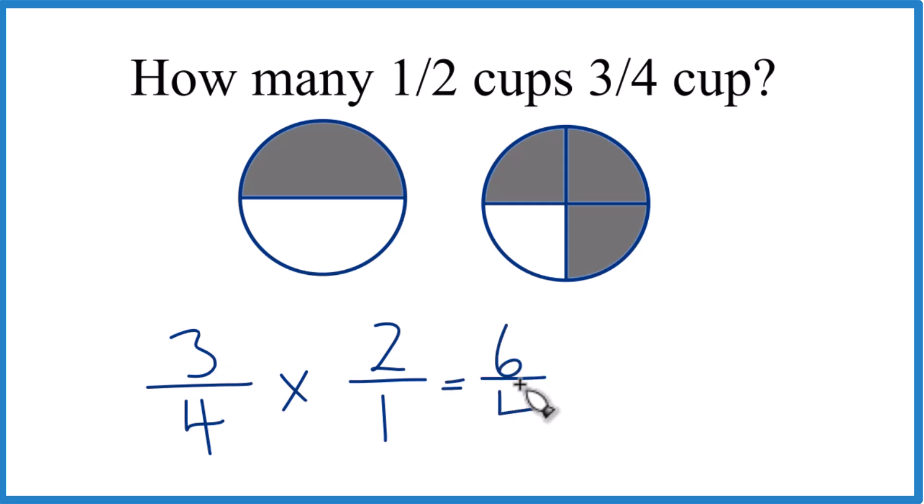And these are both even, let's just divide both by two. Six divided by two is three, four divided by two, that's two. So we end up with three halves.